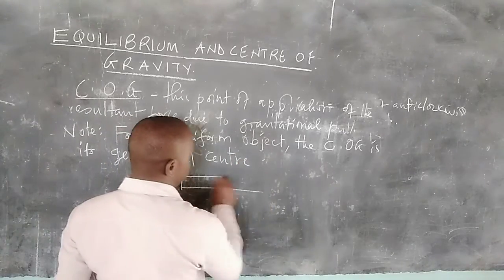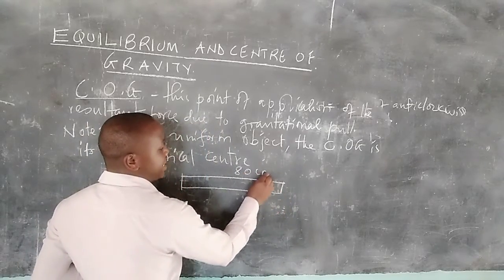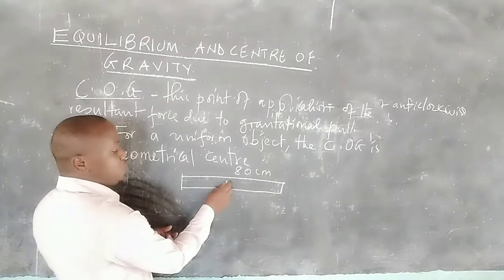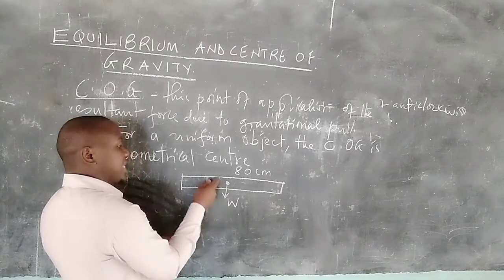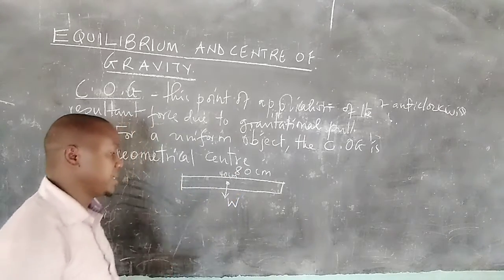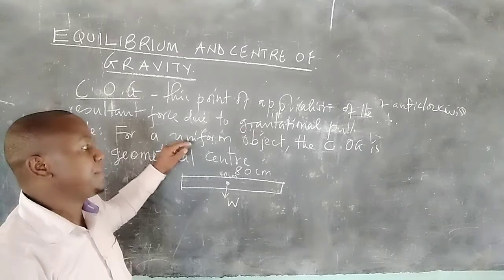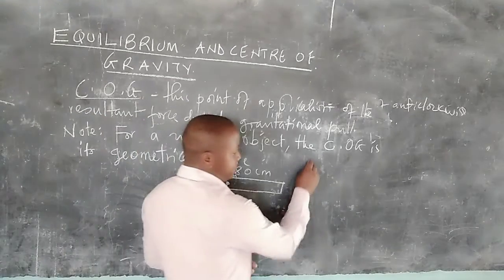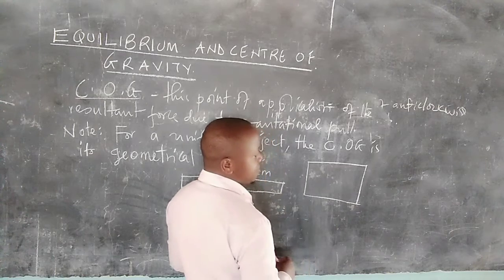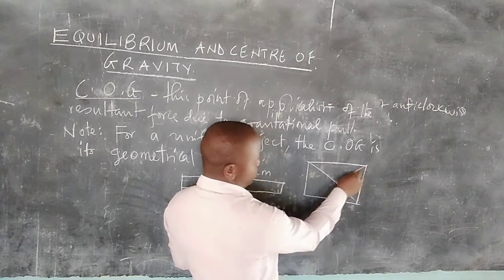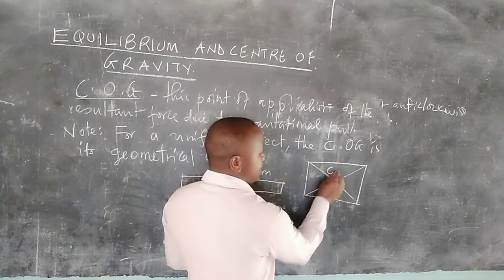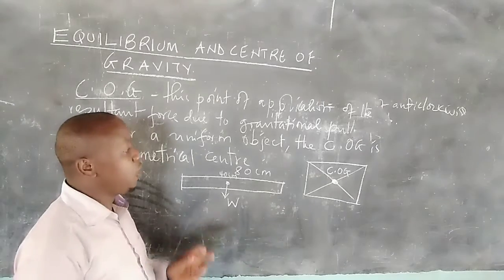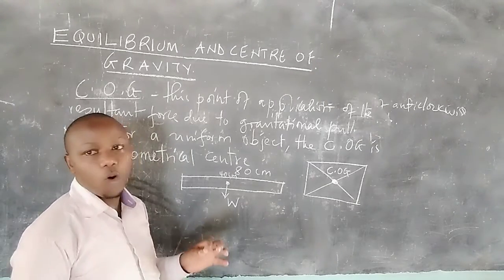For example, if we have a rod that is 80 centimeters long, its weight due to gravity acts through its center at the 40 centimeter mark. For a rectangular shape, the geometrical center is found where the diagonals intersect — that intersection point is the center of gravity. All regular objects have their center of gravity at their geometrical center.